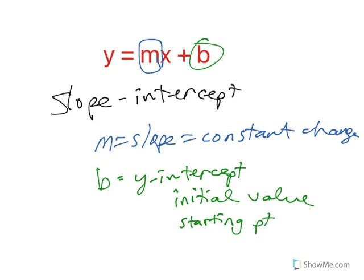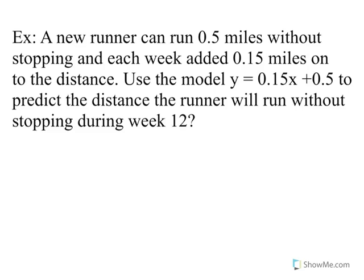Let's go ahead and play with these. A new runner can run half a mile without stopping and each week adds 0.15 miles to the distance. Use the model y equals 0.15x plus 0.5 to predict the distance the runner will run without stopping during week twelve.